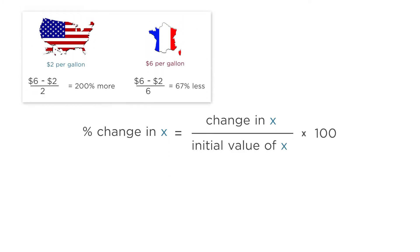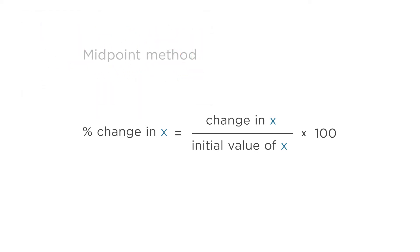Typically, we compute percent change in some variable x by dividing the change in x by the initial value of x and multiplying by 100. But as we've seen, this computation depends on which value of x is considered the initial value. The midpoint method gets around this by tweaking the computation for percent change. Instead of dividing the change in x by the initial value of x, we divide the change in x by the average value of x before multiplying by 100.